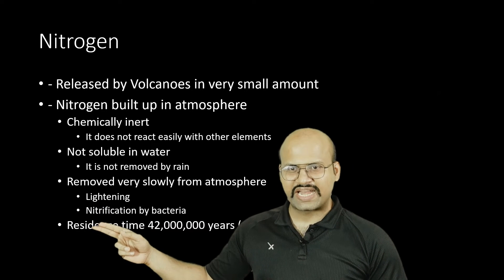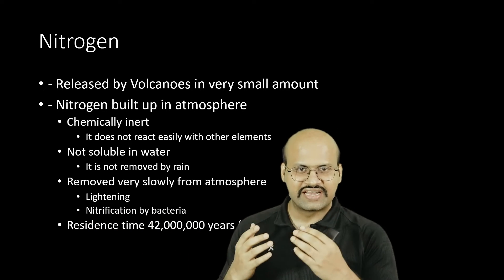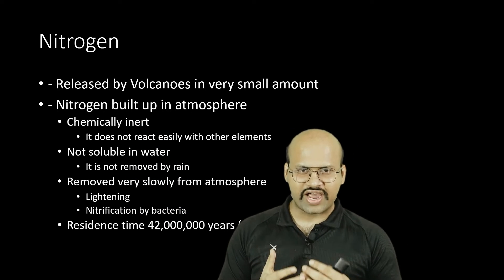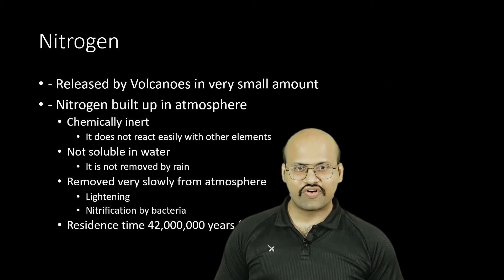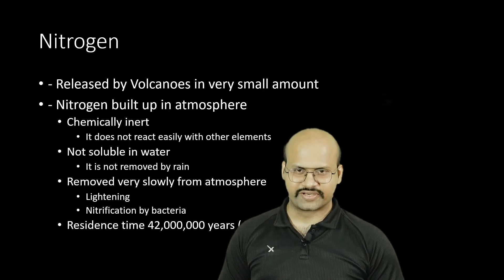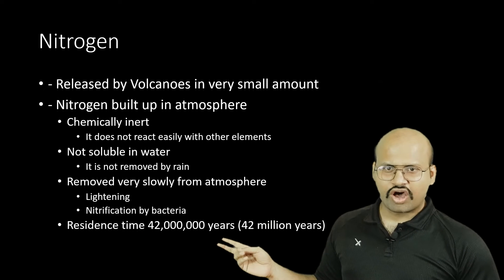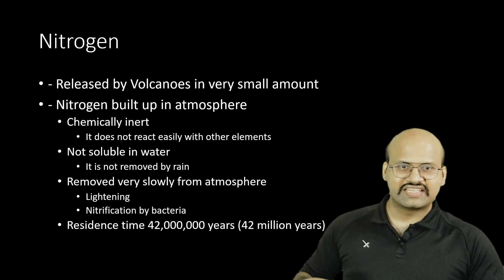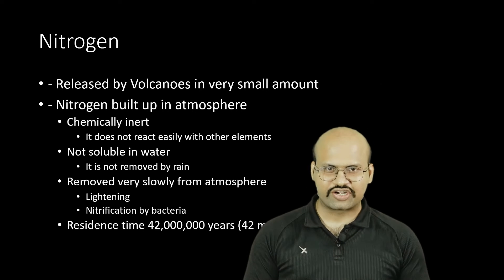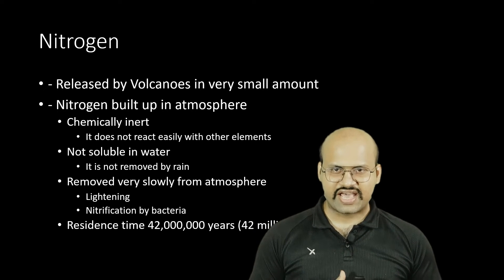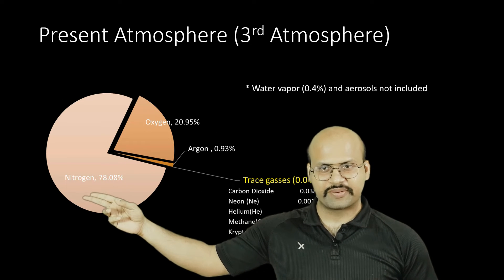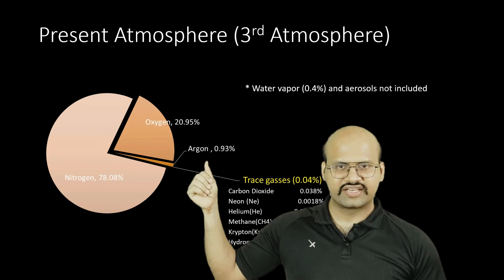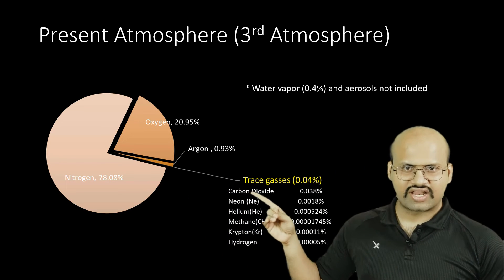Moreover, its fixation from the atmosphere occurs at a very slow rate. Lightning and nitrification bacteria are able to remove nitrogen from the atmosphere. Because of these three reasons, nitrogen survived in the atmosphere even though it was emitted in very small amounts. The residence time of nitrogen in the atmosphere is very high, and this is why the percentage of nitrogen kept increasing. As we see today, nitrogen is as much as 78% of our atmosphere, while oxygen is around 21% and argon is just under 1%. The rest are trace gases.